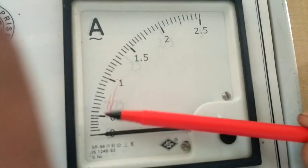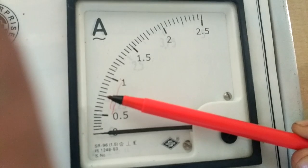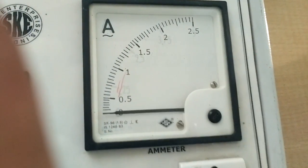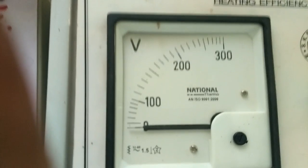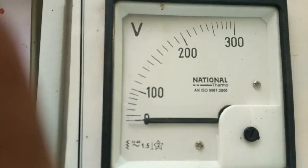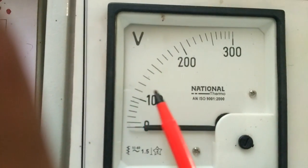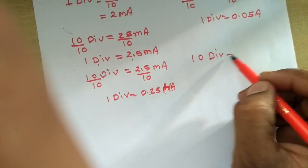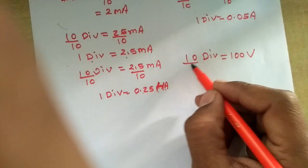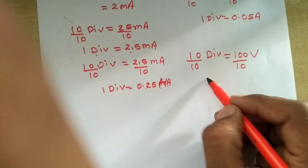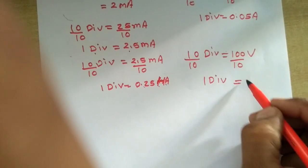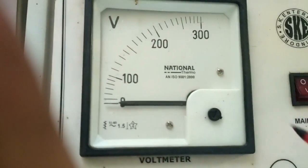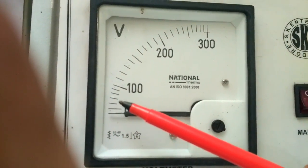If the indicator is over a certain point, you need to find the number of divisions and multiply it by the least count. A similar procedure you can apply for the voltmeter. You can see this voltmeter consists of 10 divisions, and this 10-division range is representing 100 volts. Divide 100 by 10: you get the value of one division, which is 10 volts. Each line of this instrument is representing 10 volts — 10, 20, 30, 40, and so on.